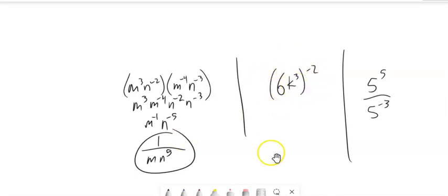This one, everything in here is taken to the negative 2 power. So I have 6 to the negative 2 and K cubed to the negative 2. So this would be 1 over 6 squared is 36, K cubed squared is K to the 6th. Remember, I have a power to a power, you can multiply.